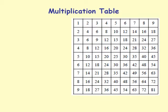Let's look at the multiplication table — the one we've all seen. The first row is counting by 1. The next is counting by 2: 2, 4, 6, 8, 10, etc. That's the table of 2: 2 times 1 is 2, 2 times 2 is 4, 2 times 3 is 6, and so on.